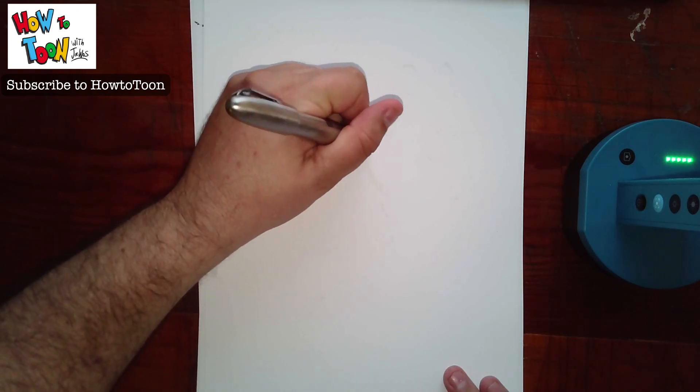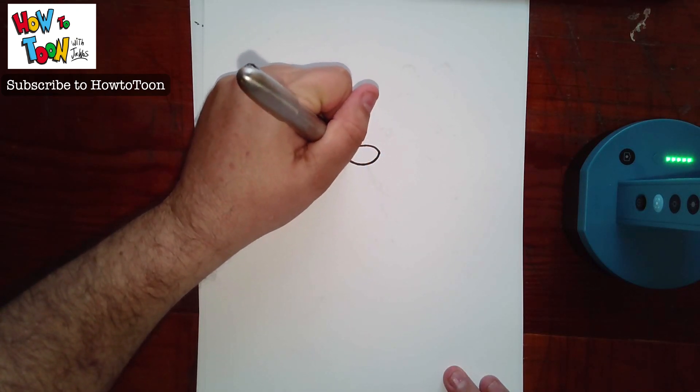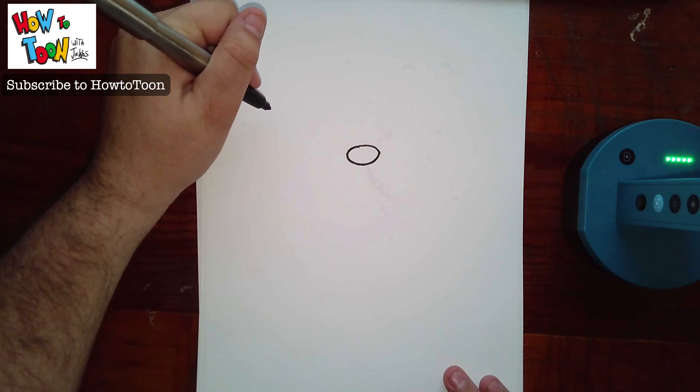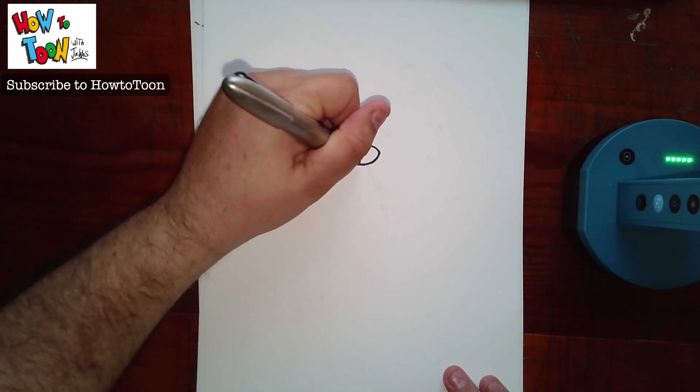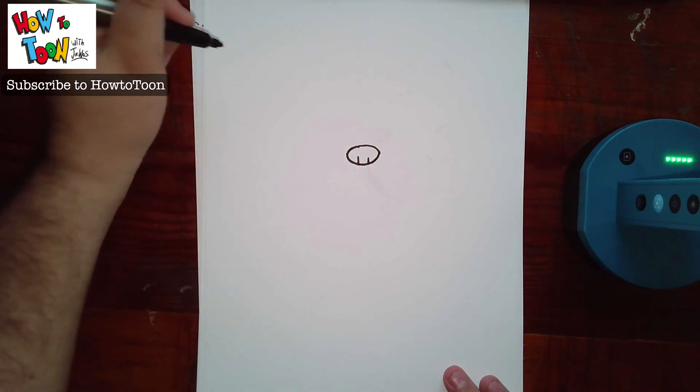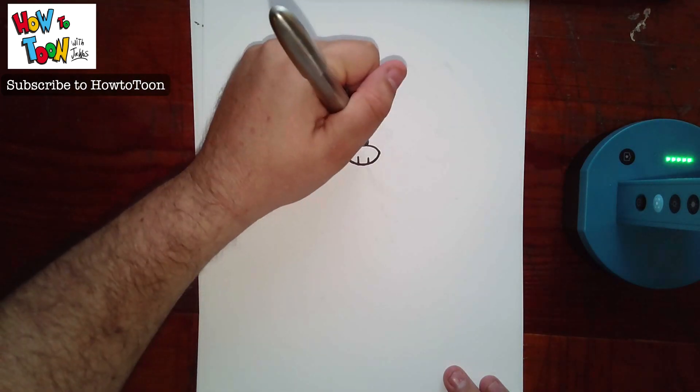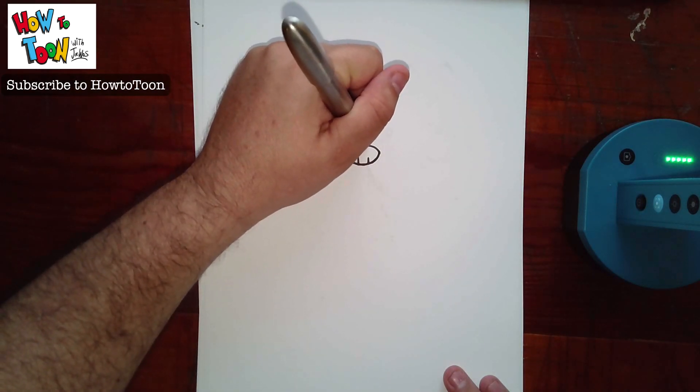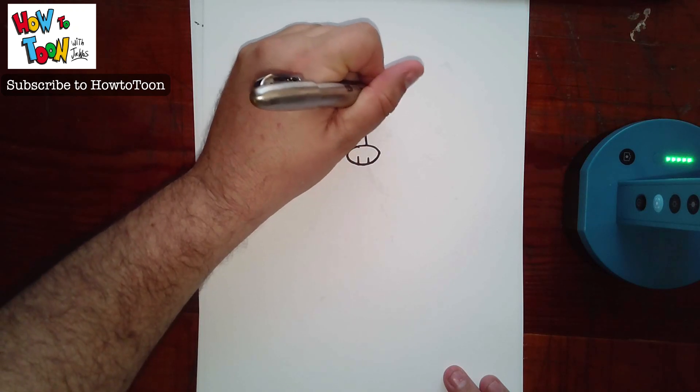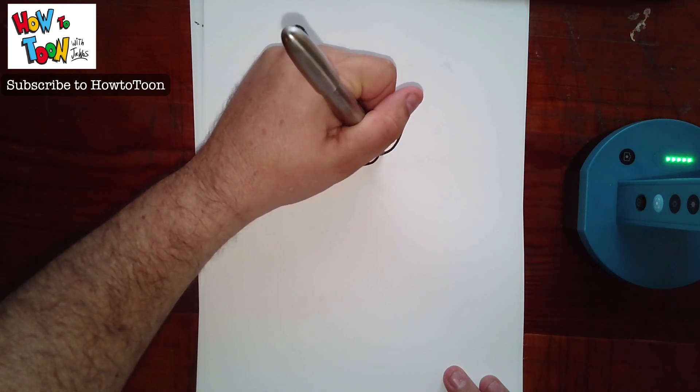We're going to start with the nose. It's sort of a little pebble or oval shape. And then you have a nostril and a nostril. Now for the eyes, we're going to start at a little off center on the top of the nose, around to the side of the nose.